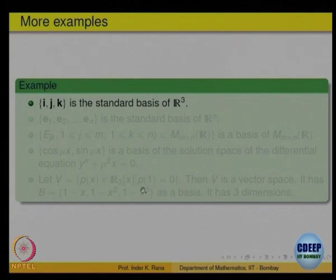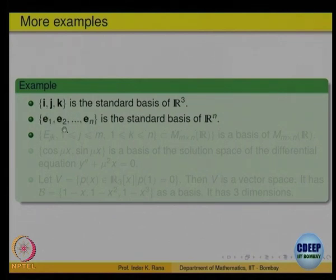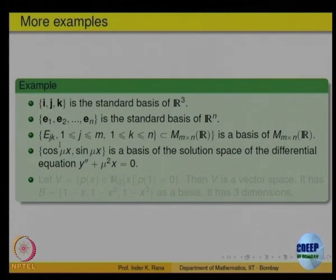More examples we have all come across: R^3, which is finitely generated with the standard basis i, j, k — that is (1,0,0), (0,1,0), and (0,0,1). Then R^n: e_1 = (1,0,0,...), e_2 = (0,1,0,...), and so on — the standard basis. For matrices, E_jk is the matrix where the (j,k)-th element is 1 and everything else is 0. There are m×n such matrices; they are linearly independent and generate everything — so the space of m×n matrices is essentially R^(mn), the standard basis written as matrices.